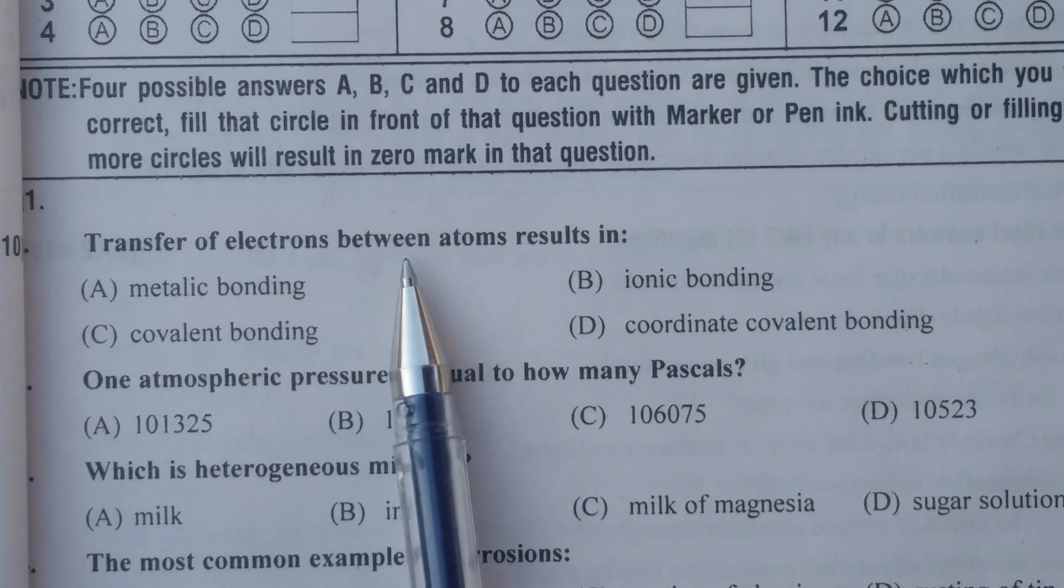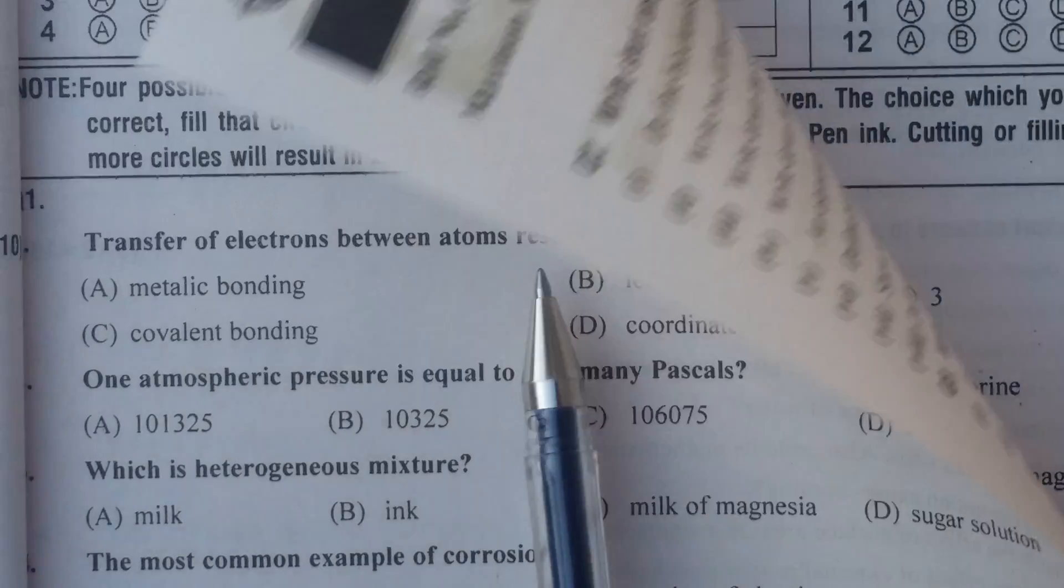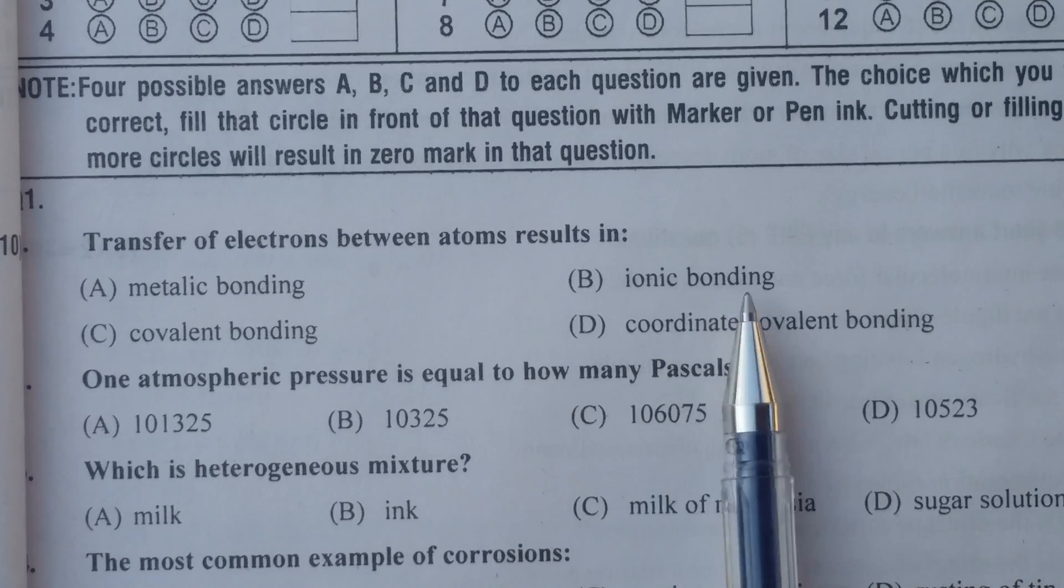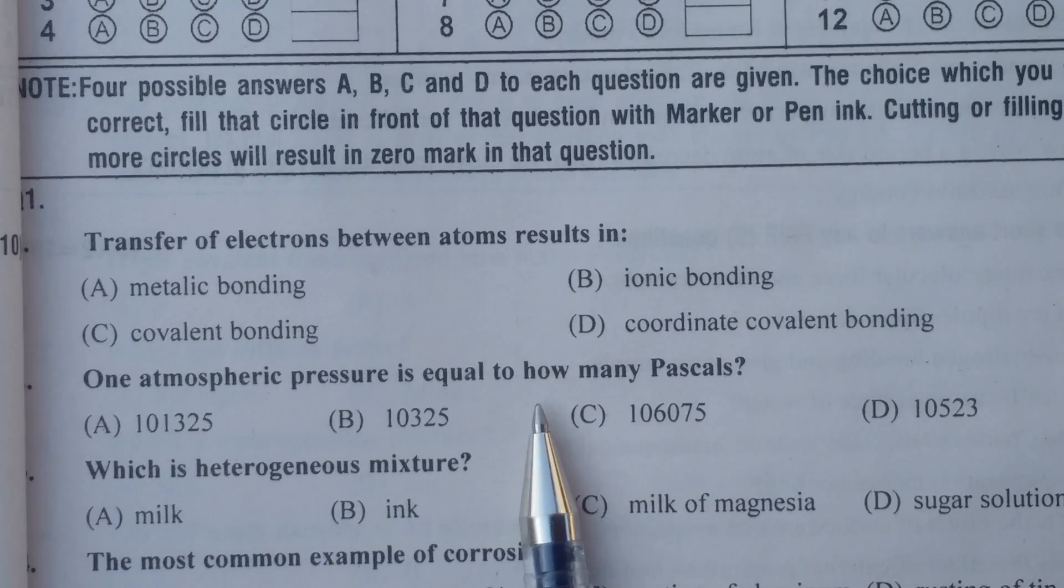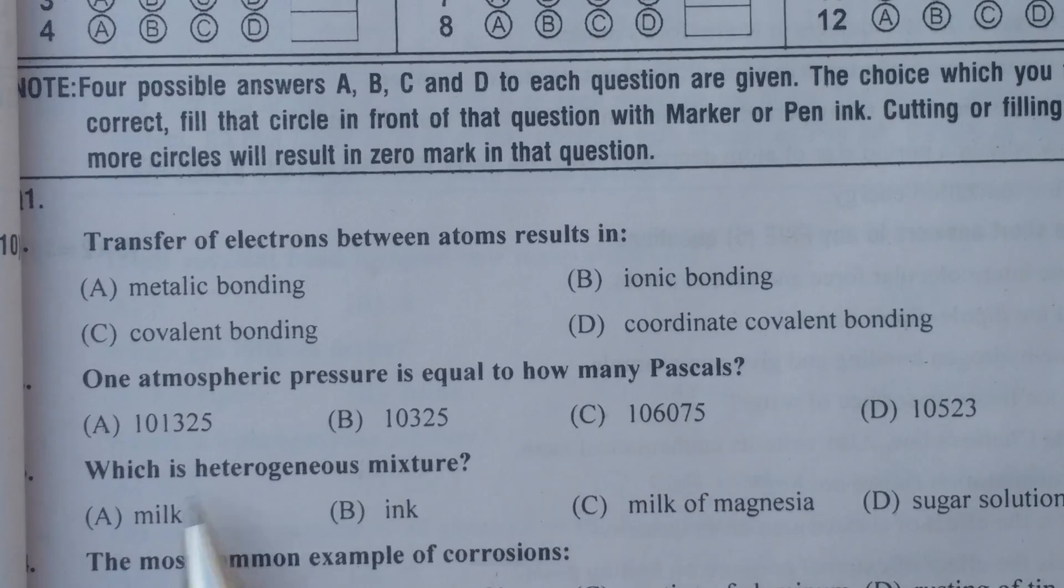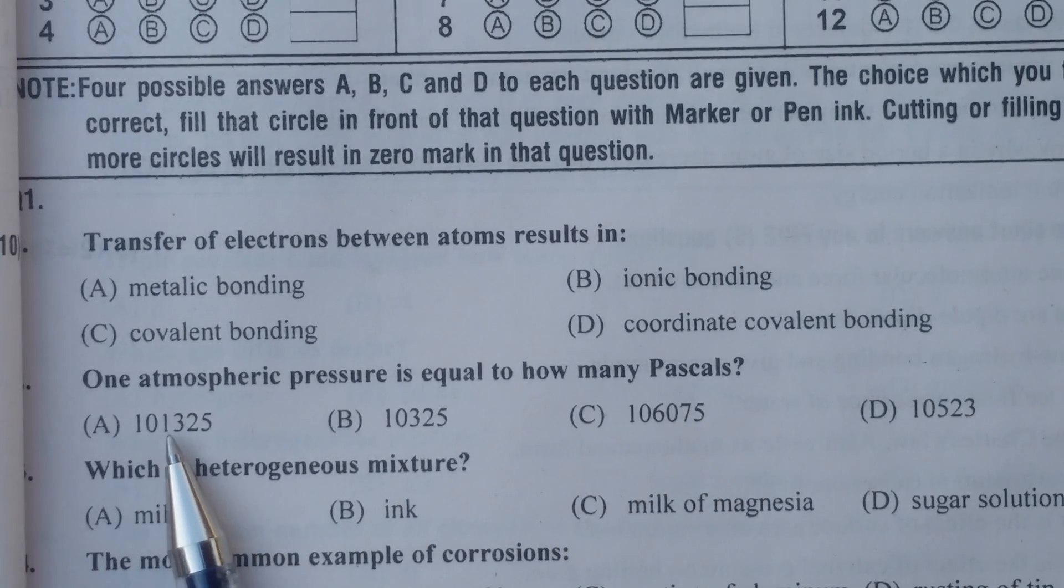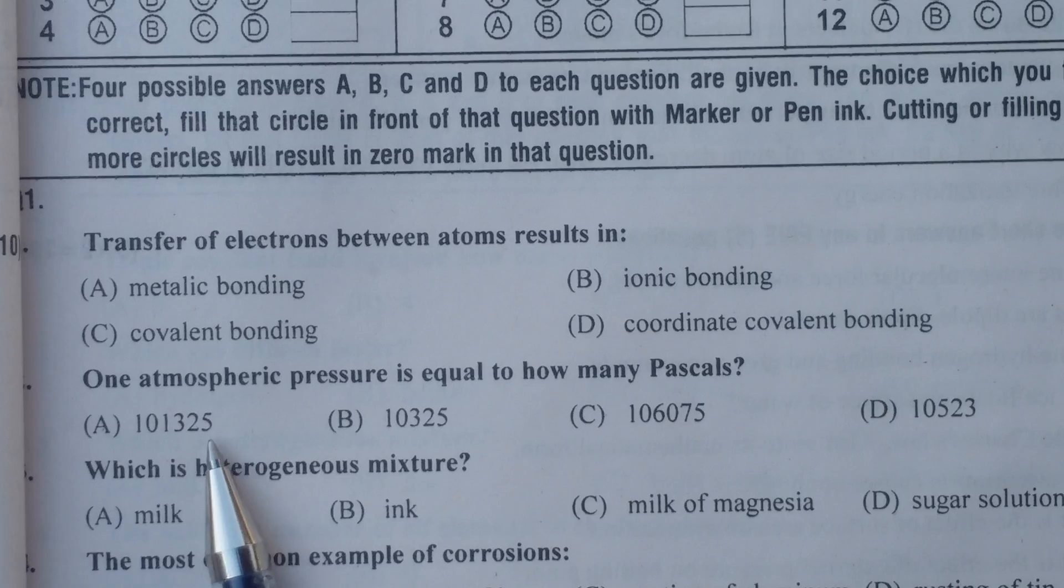Transfer of electrons between atoms results in ionic bonding. One atmospheric pressure is equal to how many Pascals? 101,325.